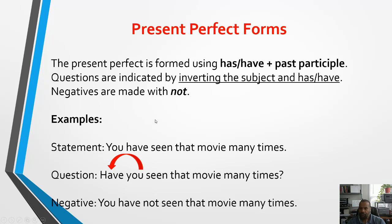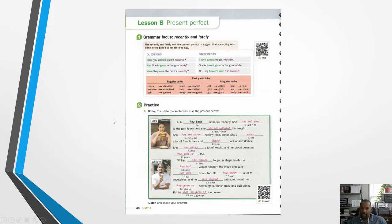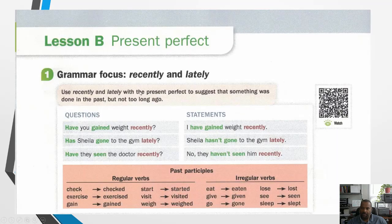Now that we've reminded ourselves about the present perfect tense, let's look in our student book on page 46. The grammar focus is recently and lately. We use recently and lately with the present perfect to suggest that something was done in the past but not too long ago.